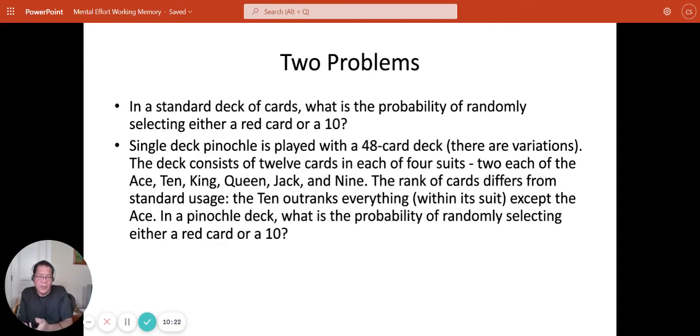Now I can cast the same problem in terms of a pinochle deck. If you're not familiar with the pinochle deck, this is going to have a huge cognitive load because you have to understand it's a 48-card deck, although there are variations. The deck consists of 12 cards in four suits, two of each of certain cards. The rank of the cards is different. And so in a pinochle deck, what's the probability of randomly selecting either a red card or a 10? It's the exact same problem as before, but the cognitive load is much greater. A student may actually get this wrong, not because they can't understand the probability concept, but because the cognitive load is simply interfering with their ability to recognize the problem. They have to concentrate on the problem. They have to discriminate between what is really relevant to the problem and what's not relevant. They may miss it, not because they can't understand probability, but because of the cognitive load.